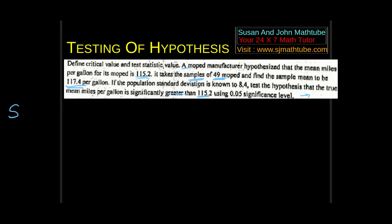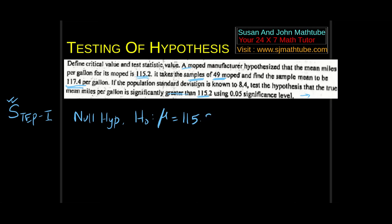Step number 1: null hypothesis — the manufacturer's value is μ = 115.2. Alternative hypothesis — what we try to prove with the help of samples. They want to prove the mileage is more than 115.2, so H₁: μ > 115.2. This is right-tailed.